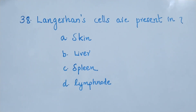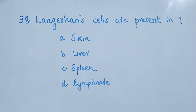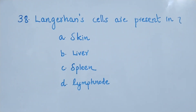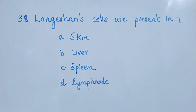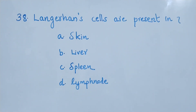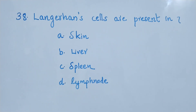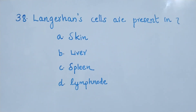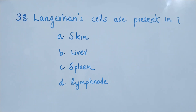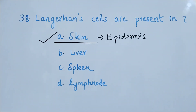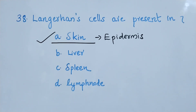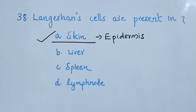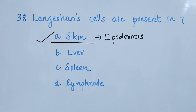Question number 38. Langerhans cells are present in: option A, skin; option B, liver; option C, spleen; option D, lymph node. The right answer is option A, skin. Langerhans cells are present in the epidermis of the skin.